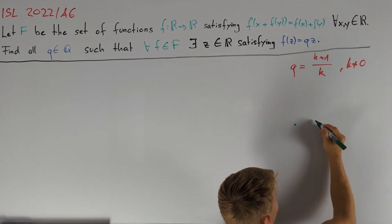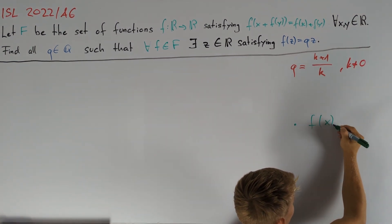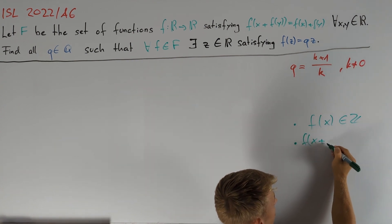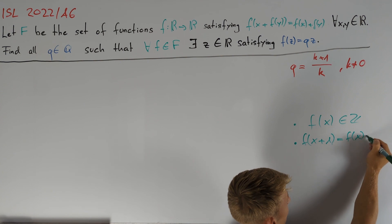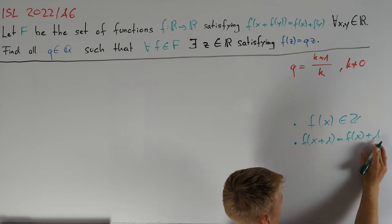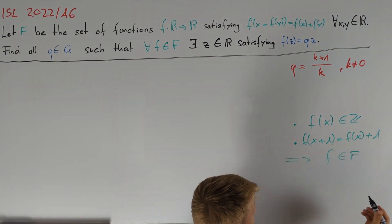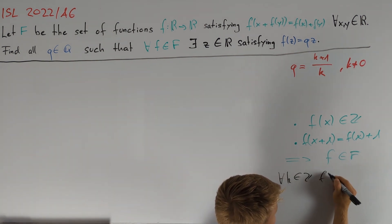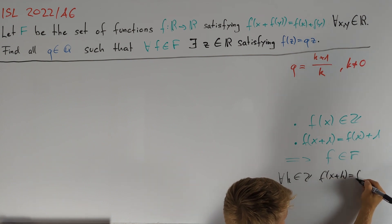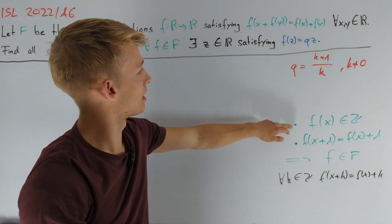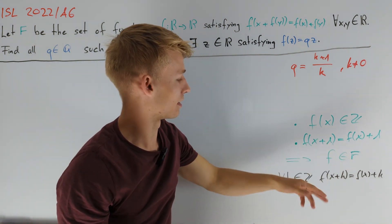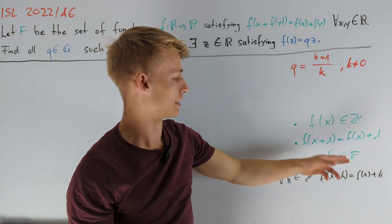To do this, the following observation is crucial: every function satisfying that f of x is always an integer and satisfying that f of x plus one equals f of x plus one are functions in our set F. From the second identity, induction directly tells us that for every integer k, f of x plus k equals f of x plus k. Since the first identity says f of y is an integer, we can use this equation to confirm that all such functions f are indeed in our set F.